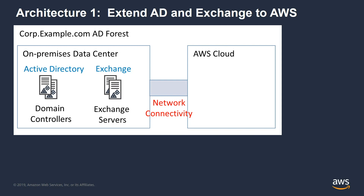We're not going to drill into Direct Connect in this video too deeply, but we do have other videos that cover that. The main thing I want to highlight is that as part of this process, you want to plan out your IP subnetting and addressing strategy such that the IP subnets in the AWS Cloud are unique and different from the ones on-premises, so that packets can route between both locations appropriately.